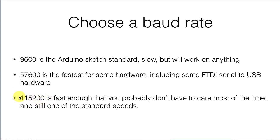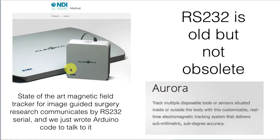115,200 is the speed I use with almost all my sketches. RS-232 is old, but it's not obsolete. This is a state-of-the-art magnetic field tracker used in image-guided surgery, and the way it communicates with computer systems — any computer system — is by RS-232. Just this year, Matt Pearson is about to defend his thesis based on code to talk to the Aurora using Arduino, to be able to track the position of instrumentation and measure its location in space.